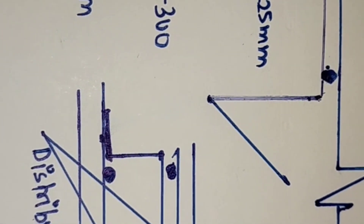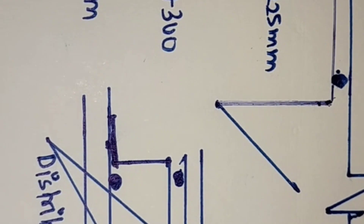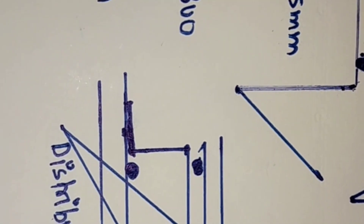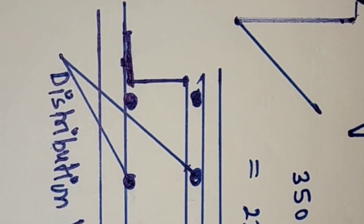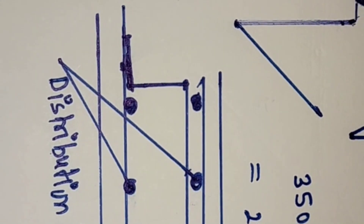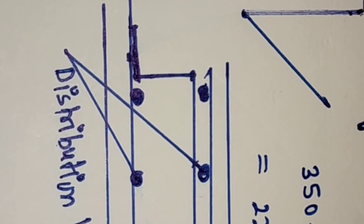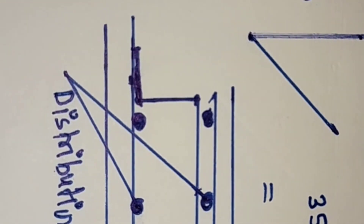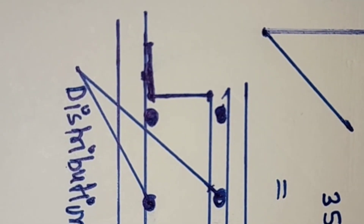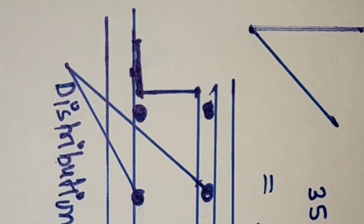Here you can see this is the raft depth — 350 mm — and the cover on both sides. We have deducted 45 mm and 45 mm. This dotted line indicates the distribution bar, and the top is the main bar.